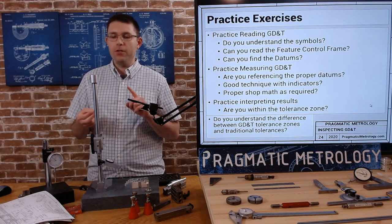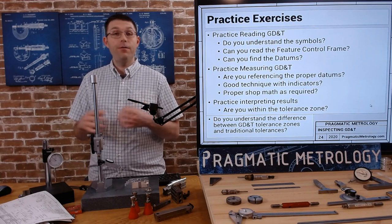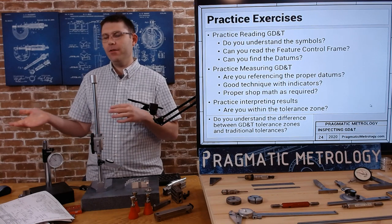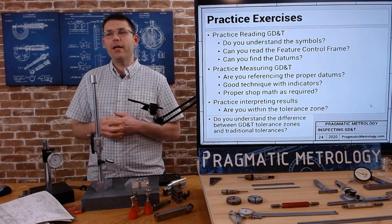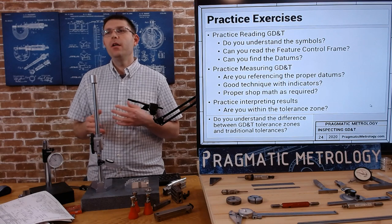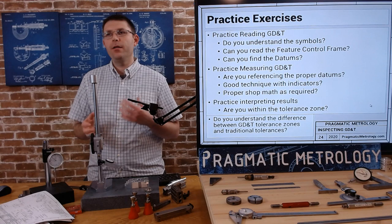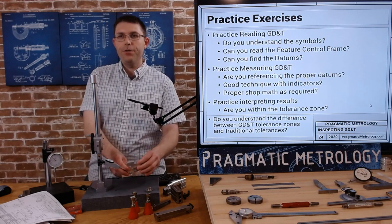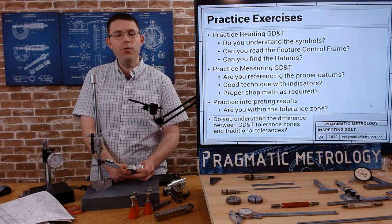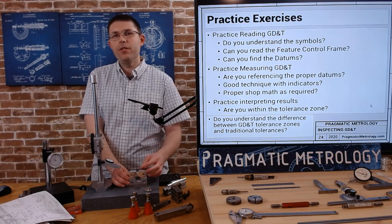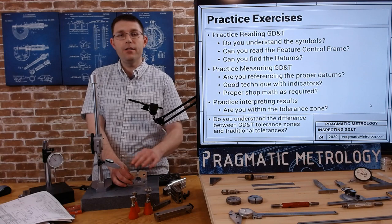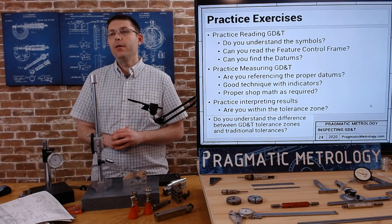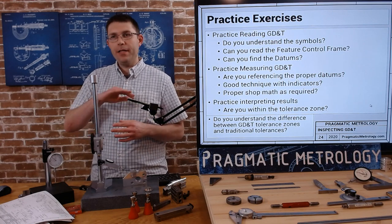Symbols first, then tolerances, modifiers, and datums. Can you find the datums, not just in the feature control frame but on the print? Sometimes prints get big and complicated and they can be difficult to find, might be on other pages. Once you feel like you're good with the blueprints, start practicing, start measuring your GD&T. Are you referencing the proper datums A, B, and C? Are you setting them up on the rock correctly? Do you need to do a special three-two-one setup or not? Sometimes you really need to when it's tight tolerance. Do you have good technique with the indicators? Are you sweeping, zero finding the high points correctly?